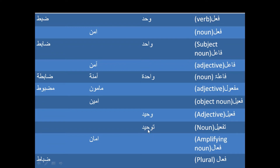Tawheed means unitarianism or unitedness. Then we have the Fa'al scale, which is an amplifying noun - Aman becomes Amman, meaning an extreme kind of honesty, safety, or integrity. On the same Fa'al scale, from Zabat we get Zubbat - those controllers who ensure there is discipline, the officers. That is about the plural form.